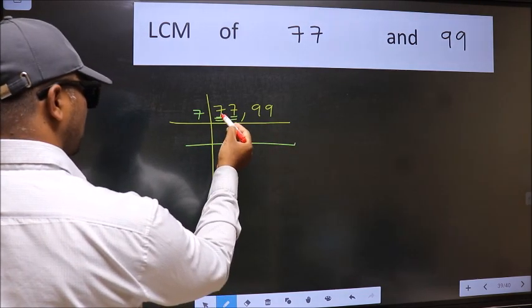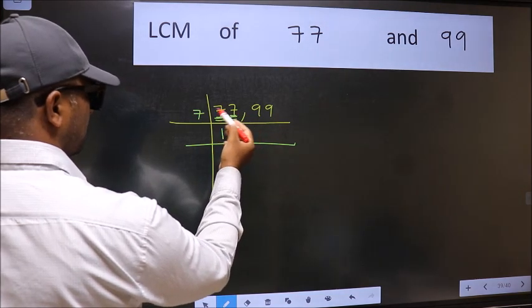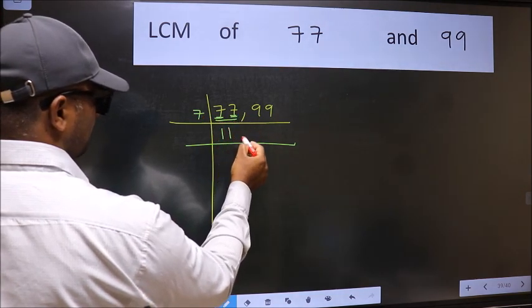First number 7. When do we get 7 in 7 table? 7 times 1 is 7. The other number 7. When do we get 7 in 7 table? 7 times 1 is 7.